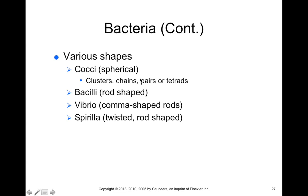Bacteria come in different shapes. We have cocci, which are spherical and can come in clusters, chains, pairs, or tetrads. They can also be bacilli or rod-shaped, vibrio which are comma-shaped, and spirilla which are twisted and rod-shaped as well.